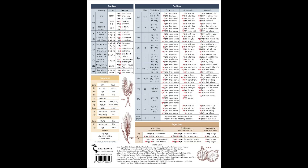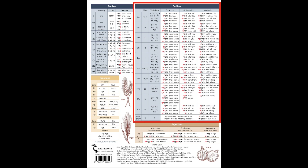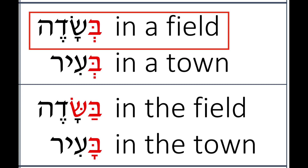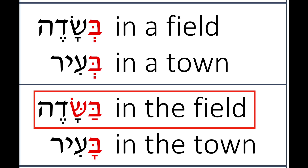On the last page, I provide detailed charts for prefixes and suffixes, which come in many, many forms. For example, you will now be able to tell the difference between bisadeh — 'in a field' — and basadeh — 'in the field.'